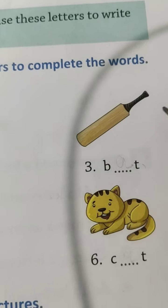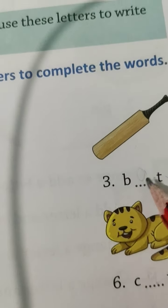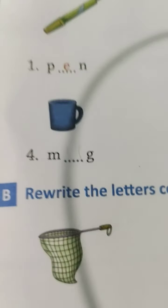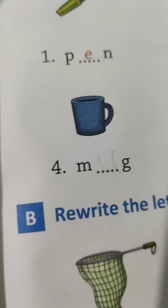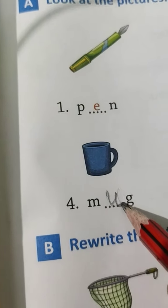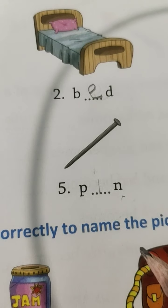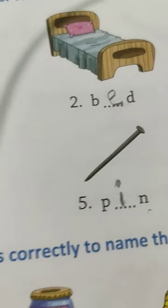Number 3 — see the picture. Yes, it is a bat. B-A-T. Bat. Number 4 — what is it? It is a mug. M-U-G. Mug. Number 5 — see the picture. Yes, it is a pin. P-I-N. Pin. Number 6 — what is it? It is a cat. C-A-T. Cat.